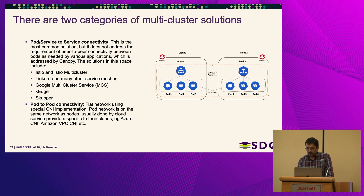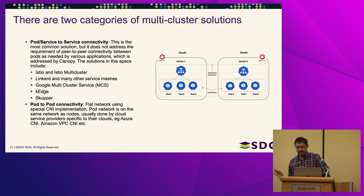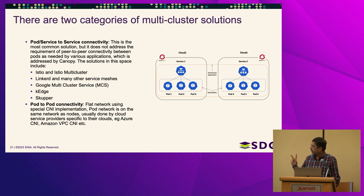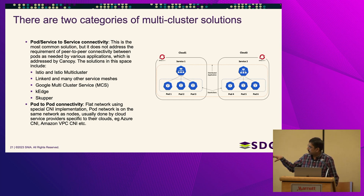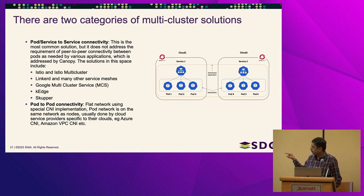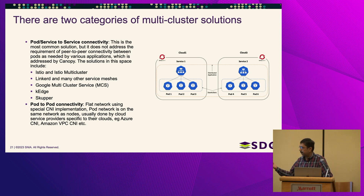There are two categories of existing solutions. One is pod-to-service connectivity — all service meshes like Istio, Linkerd, and MCAS fall in this category. They do pod-to-service across clusters and have good service discovery features since DNS is also local and can't work across clusters. But they don't address our current problem of pod-to-pod direct connectivity.